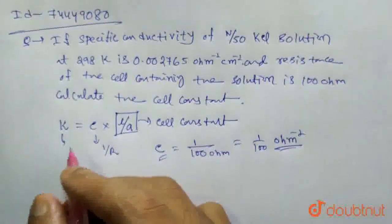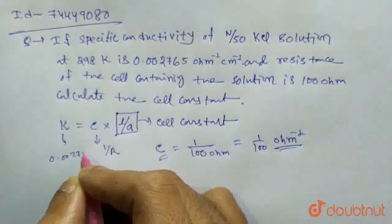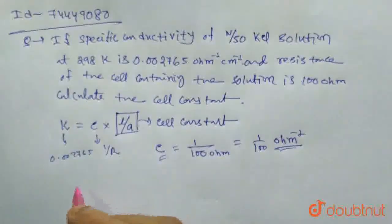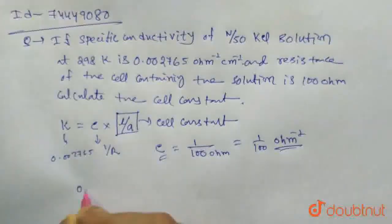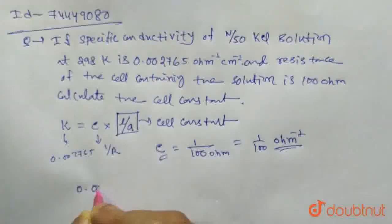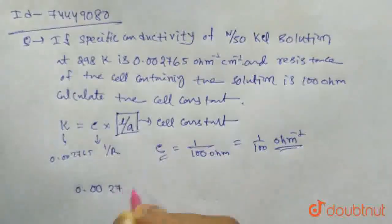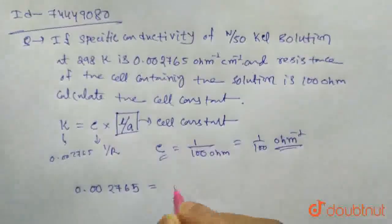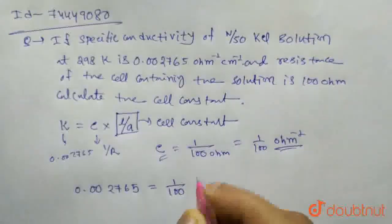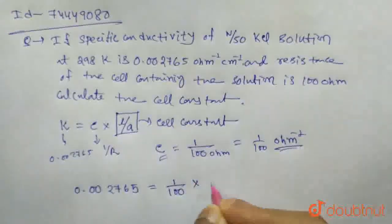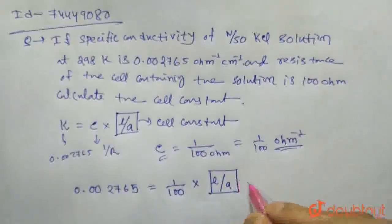Now, kappa equals conductance times L by A. That is, kappa equals 1 by 100 times L by A, where L by A is the cell constant.